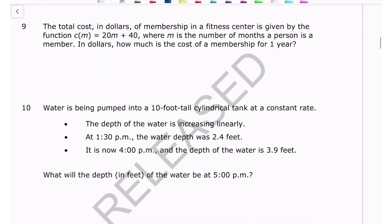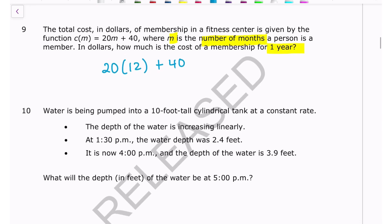Number nine: the total cost in dollars of a fitness center membership is given by a function where M is months. How much does a one-year membership cost? Since there are 12 months in a year, plug in M = 12: 20 × 12 + 40 = 240 + 40 = $280.